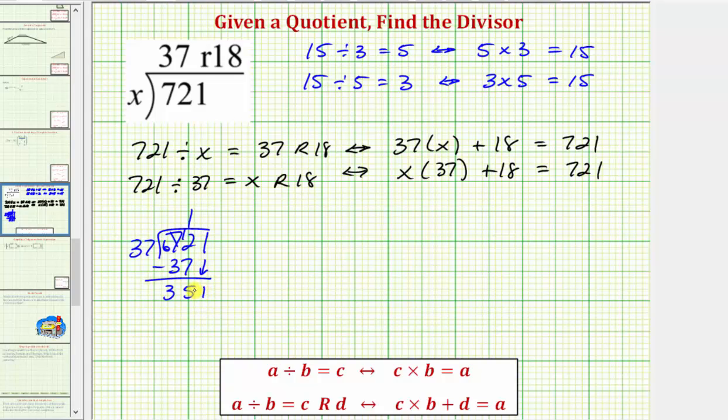Bring down the one. Now we want to know how many 37's there are in 351. That would be nine. Nine times seven is 63. Bring the six over to the tens place value. Nine times three is 27 plus six, that's 33.